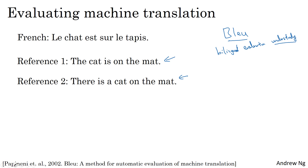The BLEU score was due to Kishore Papineni, Salim Roukos, Todd Ward, and Wei-Jing Zhu. This paper has been incredibly influential and is actually quite a readable paper, so I encourage you to take a look if you have time.